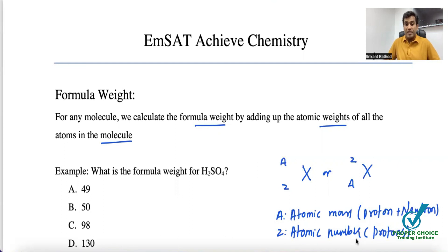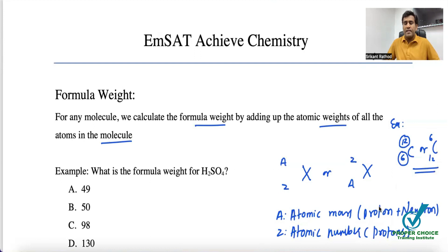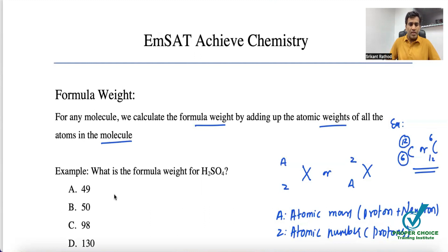If there are X number of protons, there must also be X number of electrons. For example, taking the most common element carbon: we write it as carbon-12 with atomic number 6, or alternatively as ⁶₁₂C. The atomic mass of carbon is 12 and the atomic number is 6. The periodic table will be given to us, so we make use of what has been given and understand how questions are asked based on this concept.